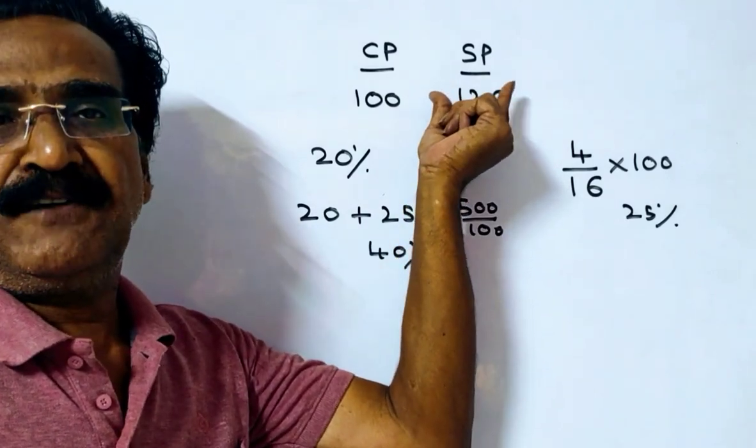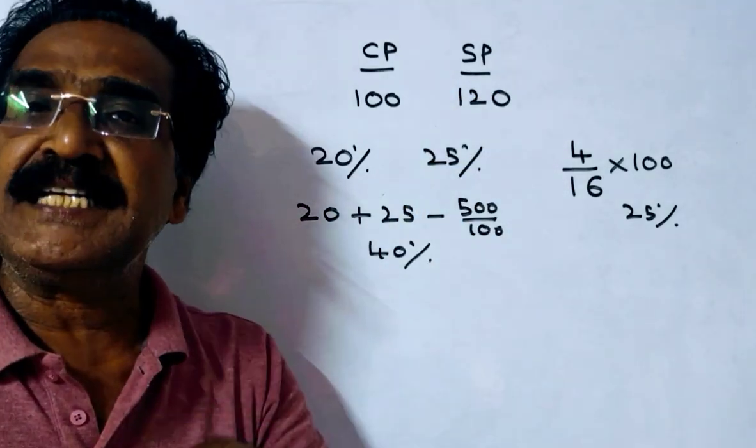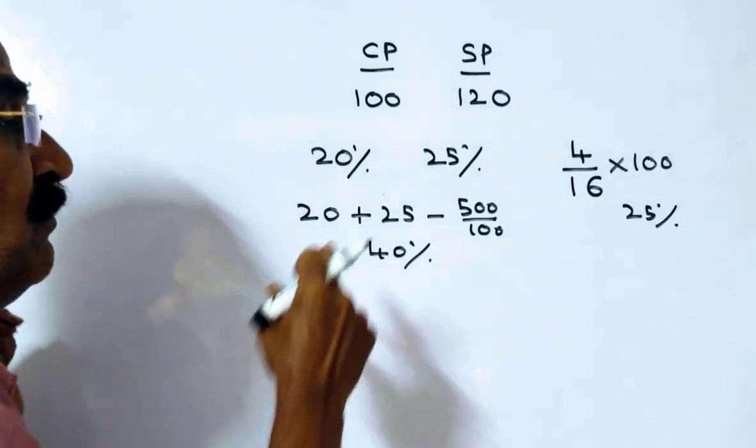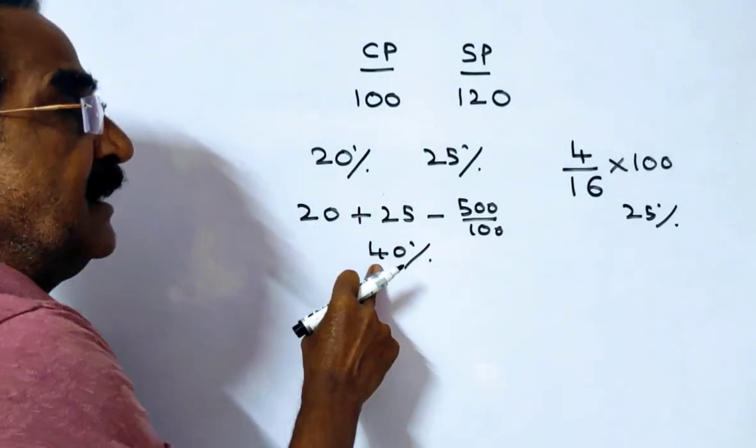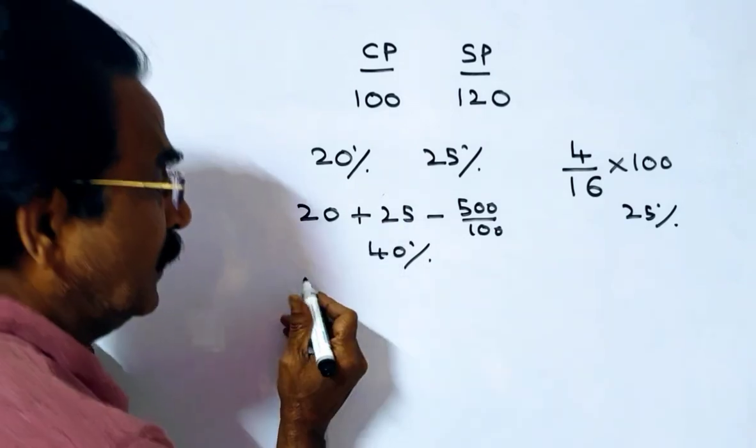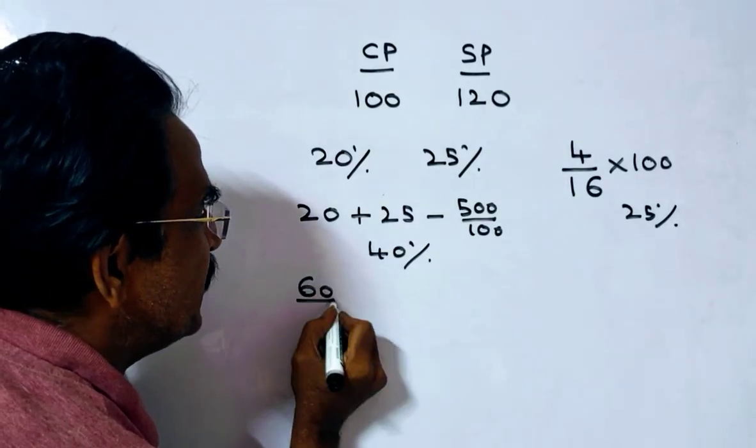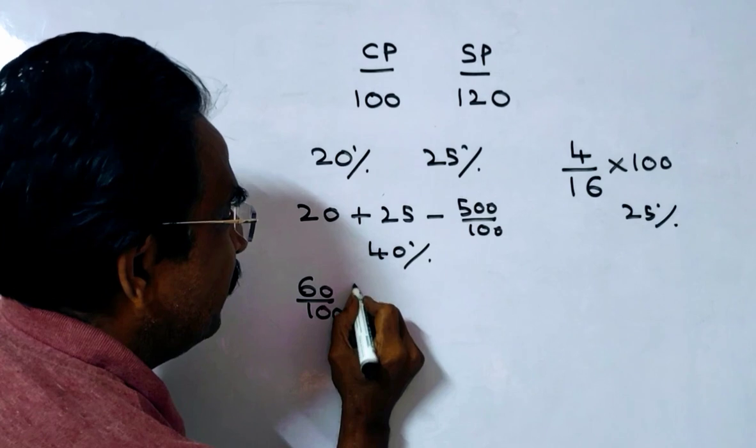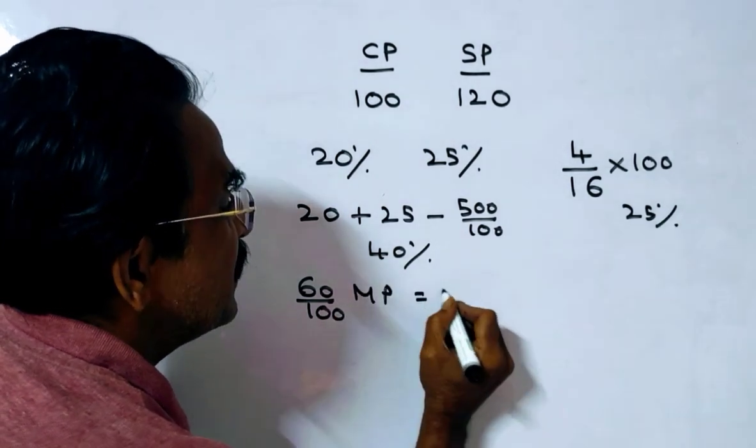This selling price of 120 is after these two successive discounts, after a discount of 40%. So this selling price is 60% of the market price. 60% of the market price is 120.